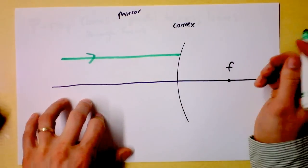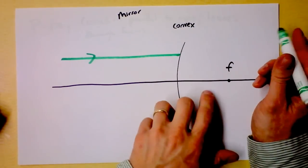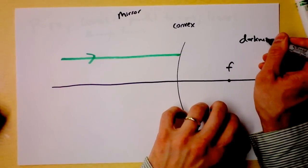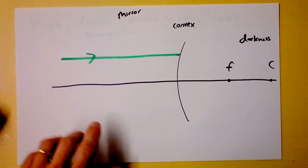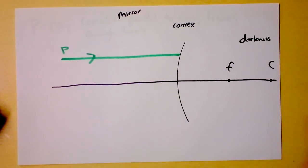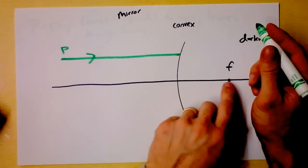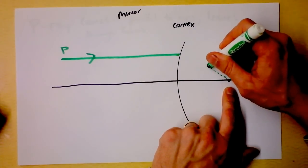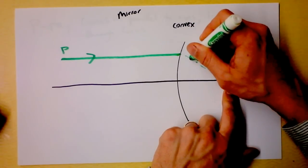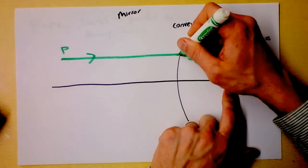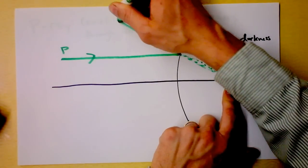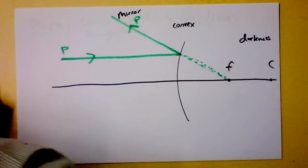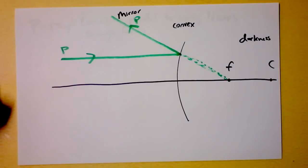What does that mean? It can't leave through the focus — the focus is over on the other side and there's nothing here but darkness. So I have to put a little asterisk on it in my mind. This is the P-ray and it doesn't quite go out through the focus; it goes out as if it came from the focus. So it was like coming from right there and leaving like right there. That's my P-ray. The P-ray is done and so is that green marker.